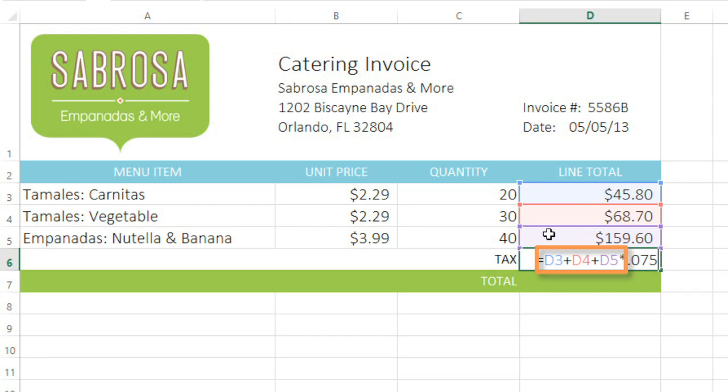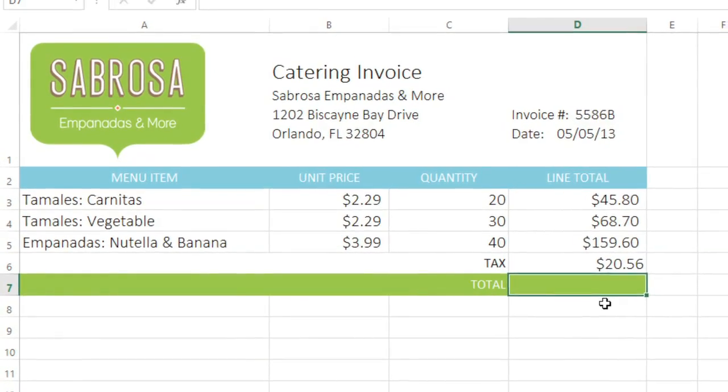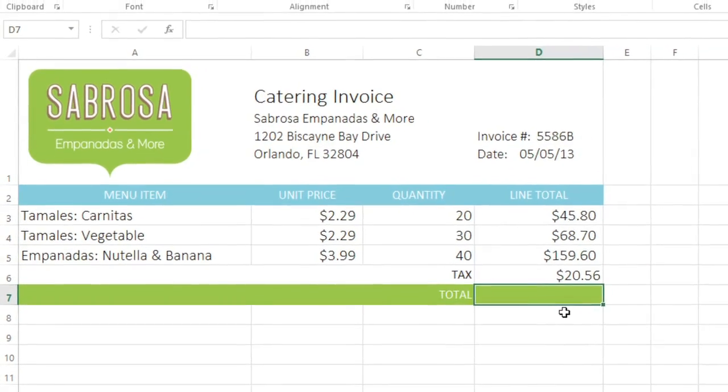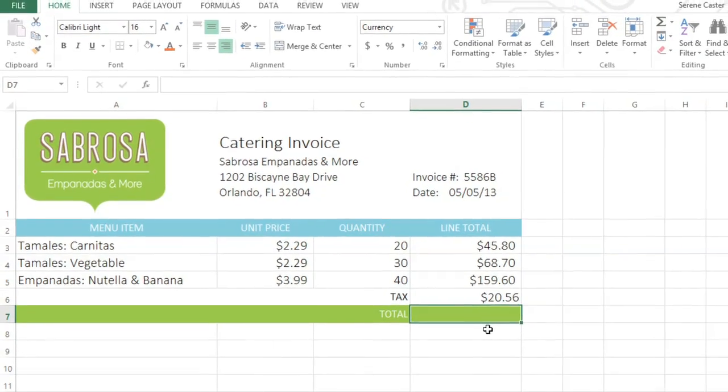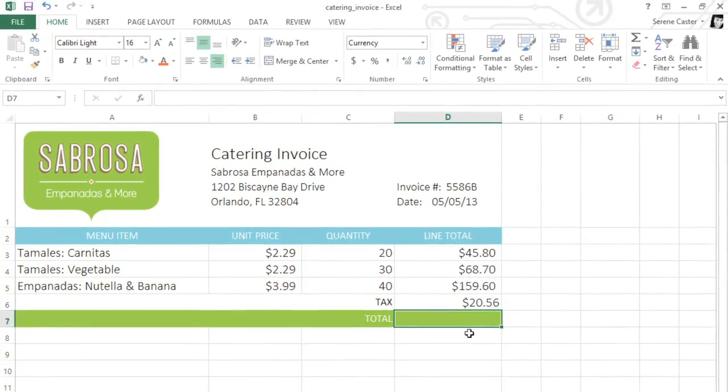We want these three values to be added first. So to do that, we just need to put them in parentheses. Parentheses are often the best way of controlling which parts of the formula are calculated first. And when this formula is calculated, we can see that the answer is $20.56. So whenever you're doing a complex formula, just remember to follow the order of operations. Then you'll get the correct answer every time.